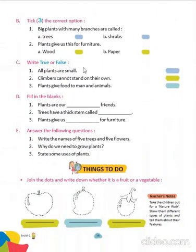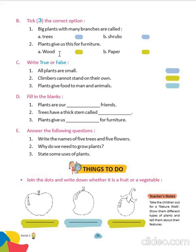Now come to Exercise B — pick the correct option. First one: big plants with many branches are called trees. Second: plants give us wood for furniture.